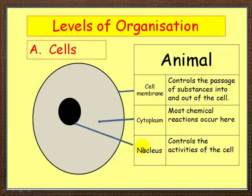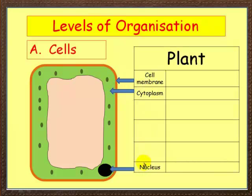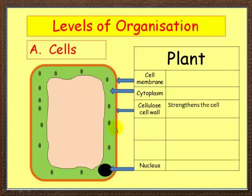Let's compare that with a plant cell. Here's a plant cell. Some things are in common with the animal cell, but some are quite different. They share a cell membrane, cytoplasm, and a nucleus. Now, what's different: around the outside of the plant cell, you've got a cellulose cell wall. This is fully permeable, and it strengthens the cell — cellulose is a very strong substance.